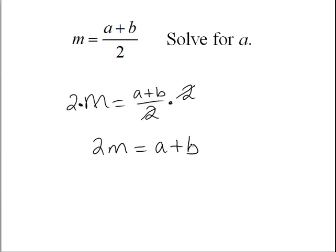Now our goal is to get A by itself, so we will simply subtract B from both sides. We realize that we do not have any like terms, so we have 2M minus B equals A.